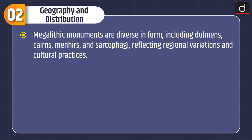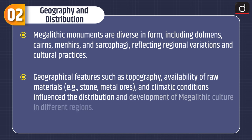Megalithic monuments are diverse in form, including dolmens, cairns, menhirs, and sarcophagi, reflecting regional variations and cultural practices. Geographical features such as topography, availability of raw materials — for example, stone and metal ores — and climatic conditions influenced the distribution and development of megalithic culture in different regions.